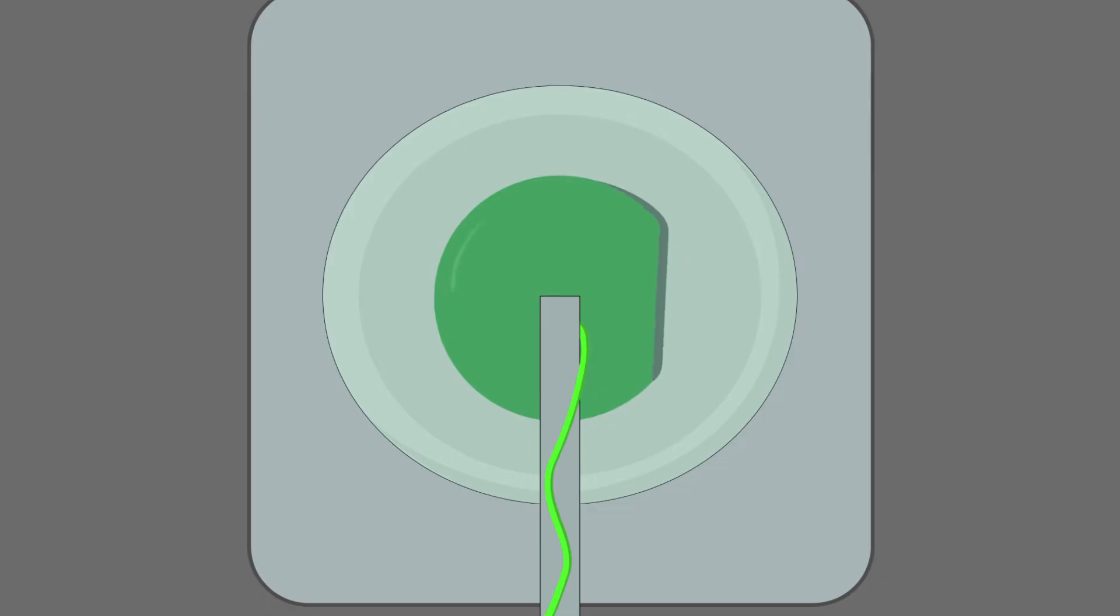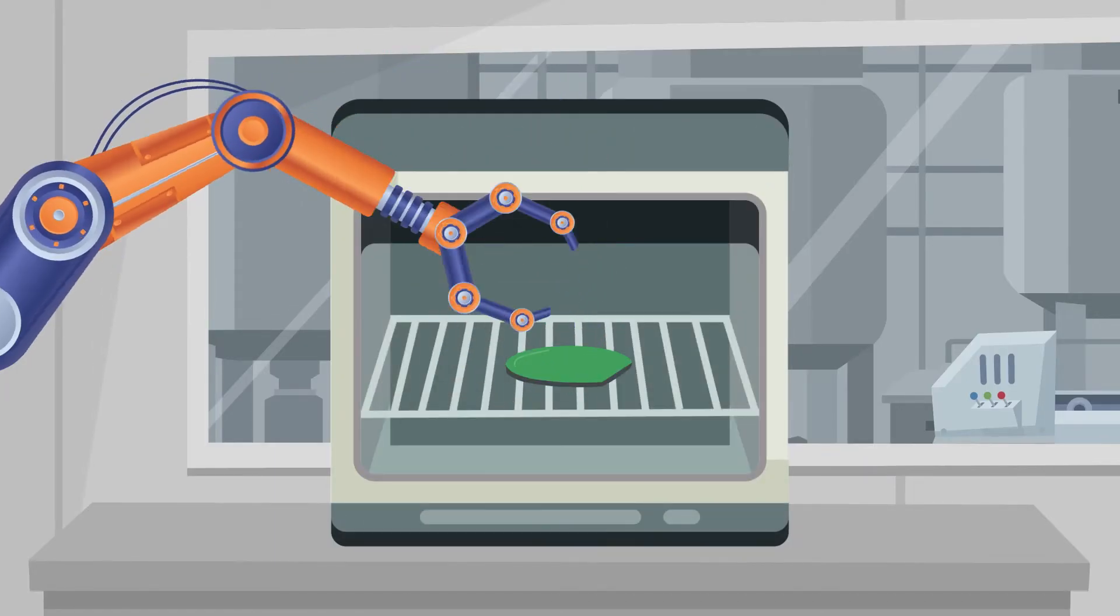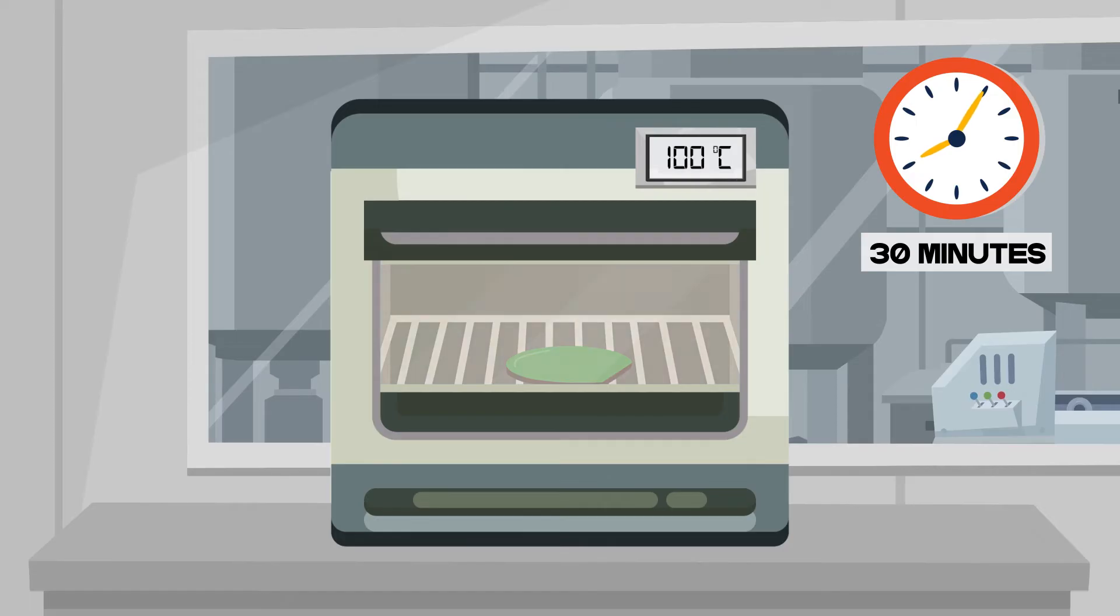Then we place the wafer in the oven again to bake. The wafer must be baked for a few minutes so that the photoresist layer becomes compact.